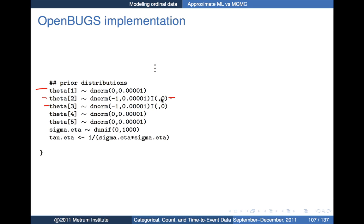The I() modifier in WinBUGS creates a truncated distribution. I've taken a relatively flat normal centered at minus 1 and truncated it on the right-hand side at zero, so it will only return values less than zero. I do the same thing for theta 3. Alternatively, I could have taken a log-normal variable and used its negative.